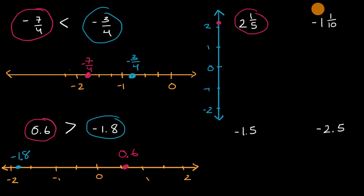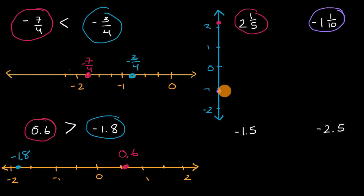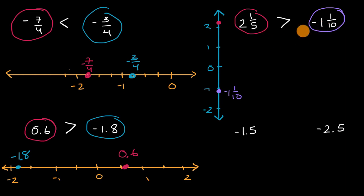And where is negative one and 1 tenth? Well, we're not going to go below zero. So negative one, and we're going to go another 1 tenth beyond that below zero, so it's going to be roughly around there — that is negative one and 1 tenth. And so we can see that negative one and 1 tenth is less than positive two and 1 fifth, or positive two and 1 fifth is greater than negative one and 1 tenth.